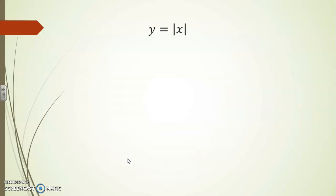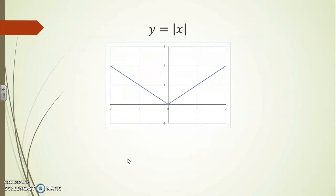y equals absolute value of x is a function that has a v shape. In fact it's a piecewise function that is determined by two different rules. To the left of 0 this is actually a line y equals minus x. To the right of 0, y equals x is the line that is being used.